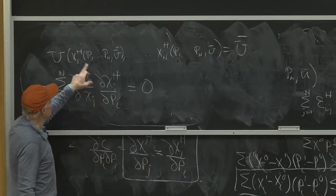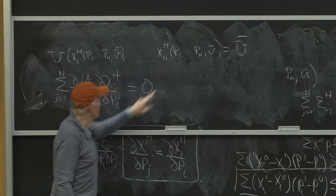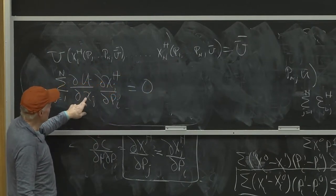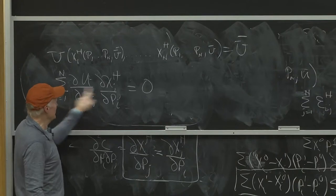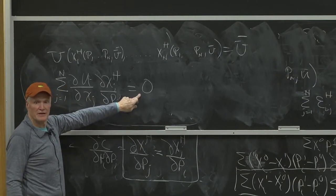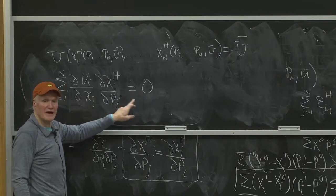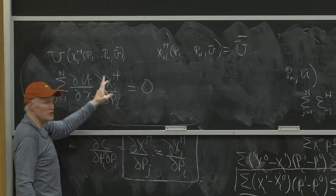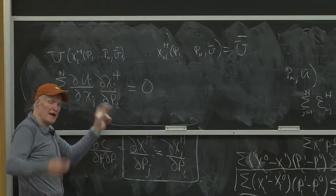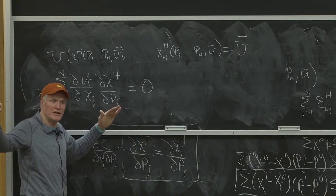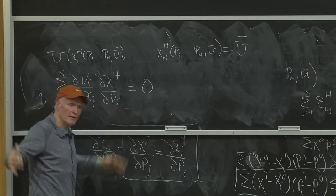Well, the price of good i is going to change all the goods, but once I weight them by their marginal utilities, you've got to end up with no change in utility. So that total derivative has to be 0. In other words, it's going to increase some goods, reduce other goods, but it has to do it in such a way as to hold utility constant.